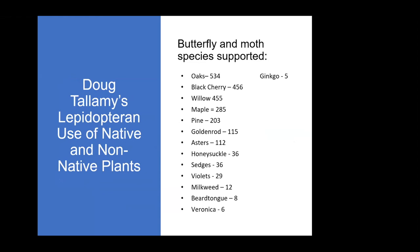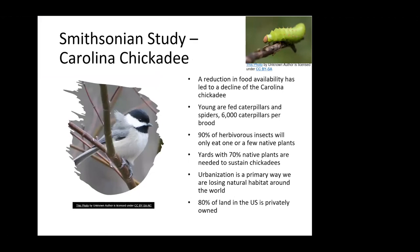The Carolina chickadee has a much better survival rate for its young if there's at least 70% native plants in the garden, because they feed about 6,000 caterpillars to their young in one nest.